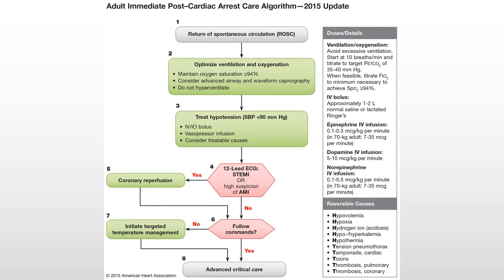We're going to steal a little bit of that. If they're unable to follow commands, we'll take them to the ICU and cool them off — not dunking in ice water, but very carefully lowering their core temperature down to the low 90s. Then we paralyze and sedate them, keep them asleep for a day, and slowly warm them back up. Studies have shown this improves brain function following a code.